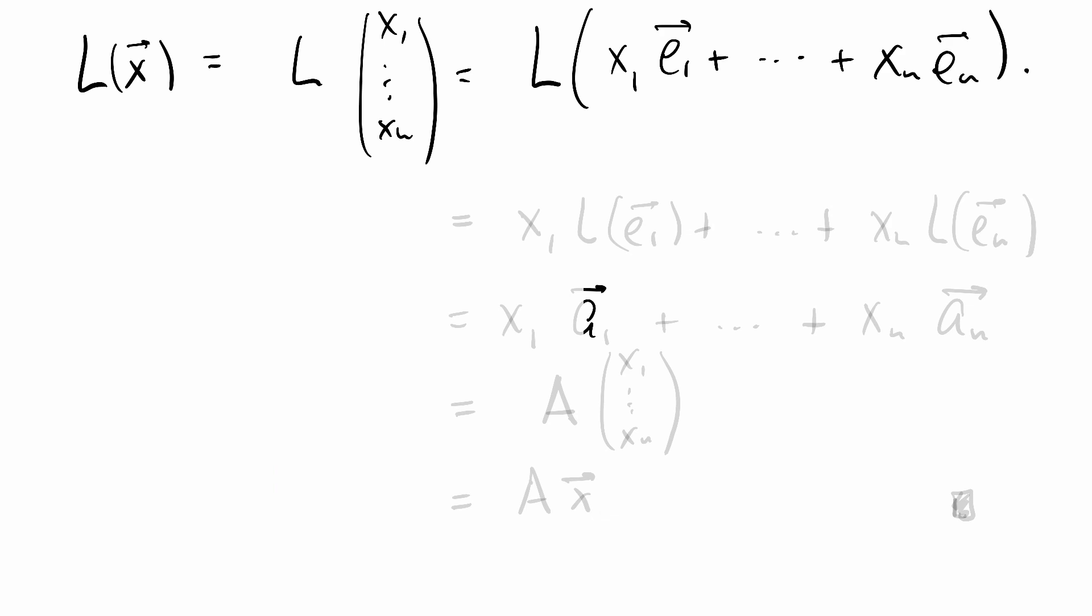This is a linear transformation. Therefore, we can pull out the scalars and distribute across the plus sign. So this is X_1 L(E_1) plus X_N L(E_N).